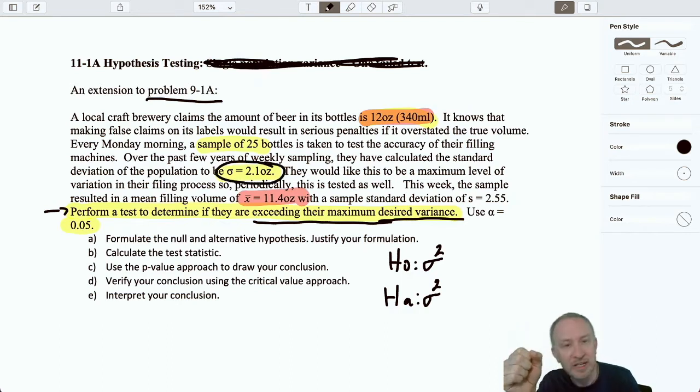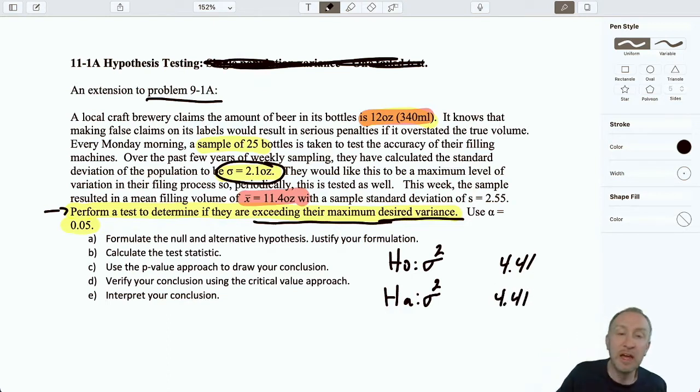I can see here that it's giving me a sample average and a hypothesized or targeted average. So there's information here that might lead me to think that we're doing a test on means. Don't focus on the numbers that are given in the problem. Focus on the words of the problem and what it's telling you you need to be looking for. I have a test here on variance. I want to see if we're exceeding their maximum desired. So are we more than that desired variance? Our desired variance here, well, we're given a standard deviation of 2.1.